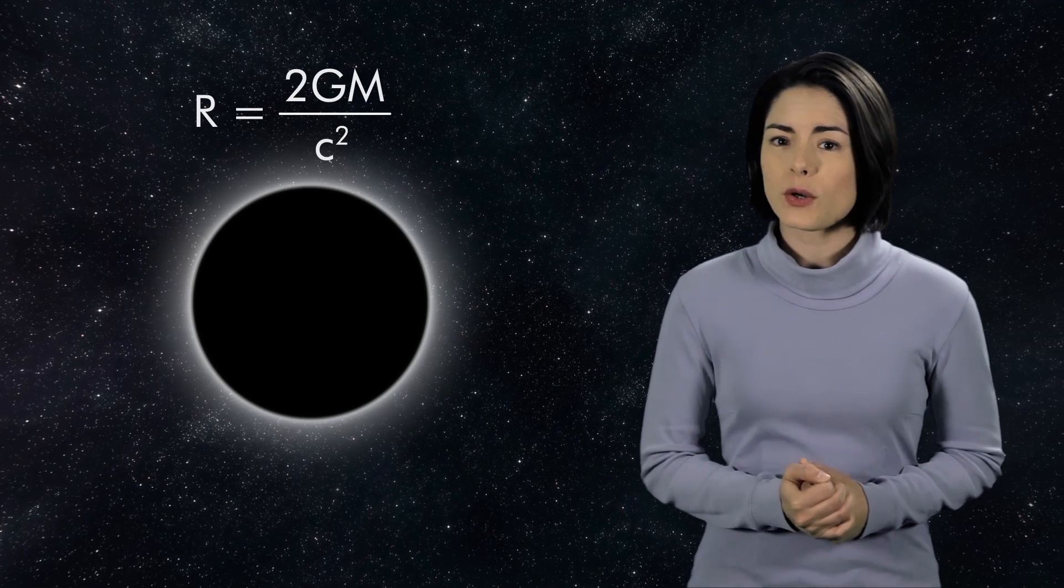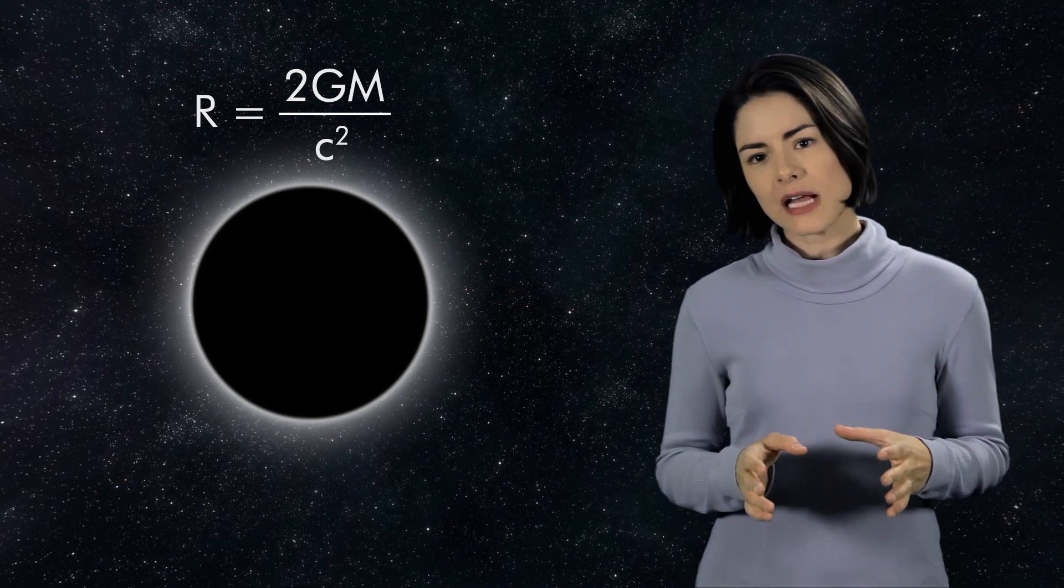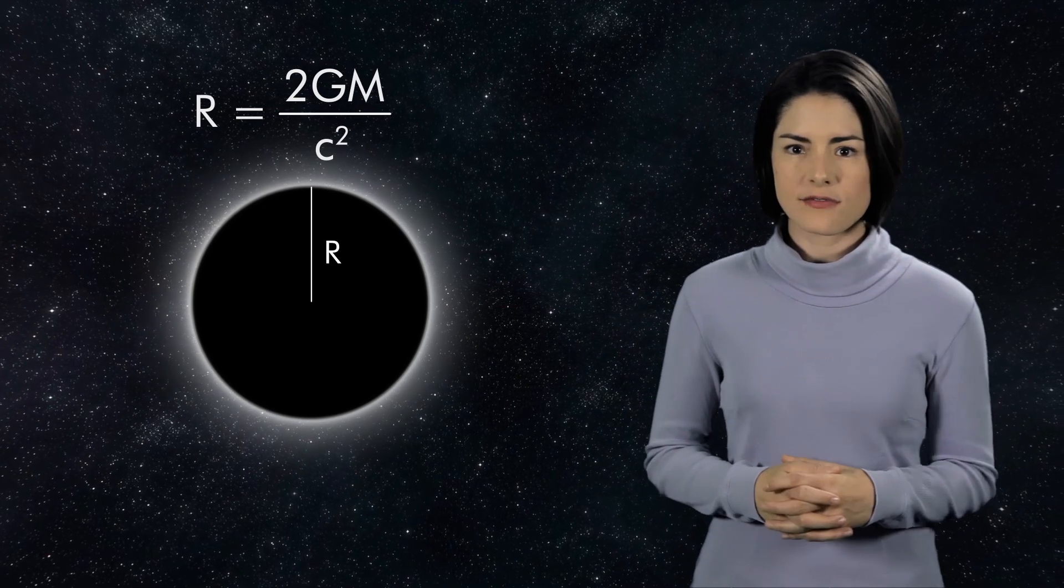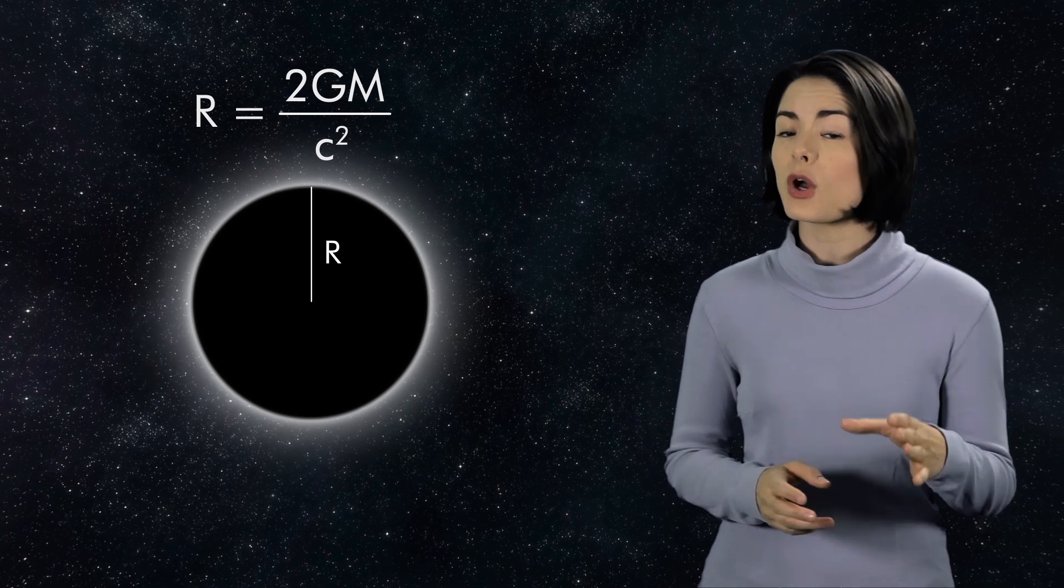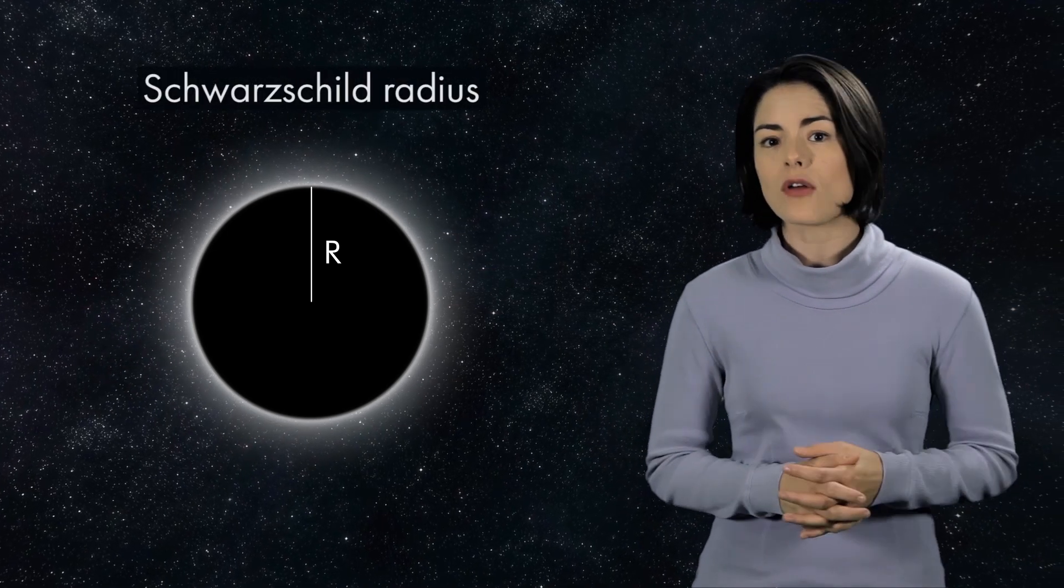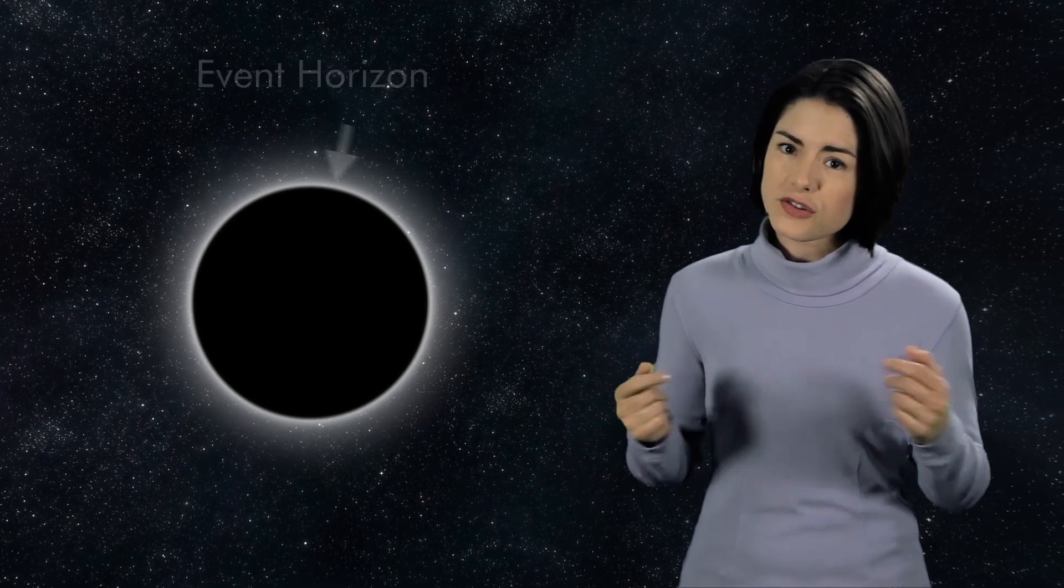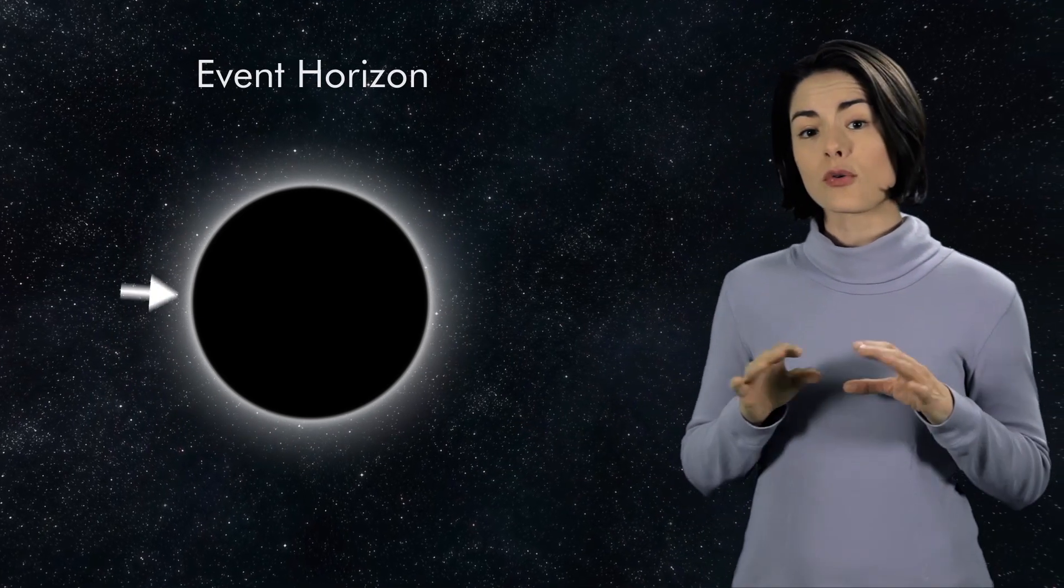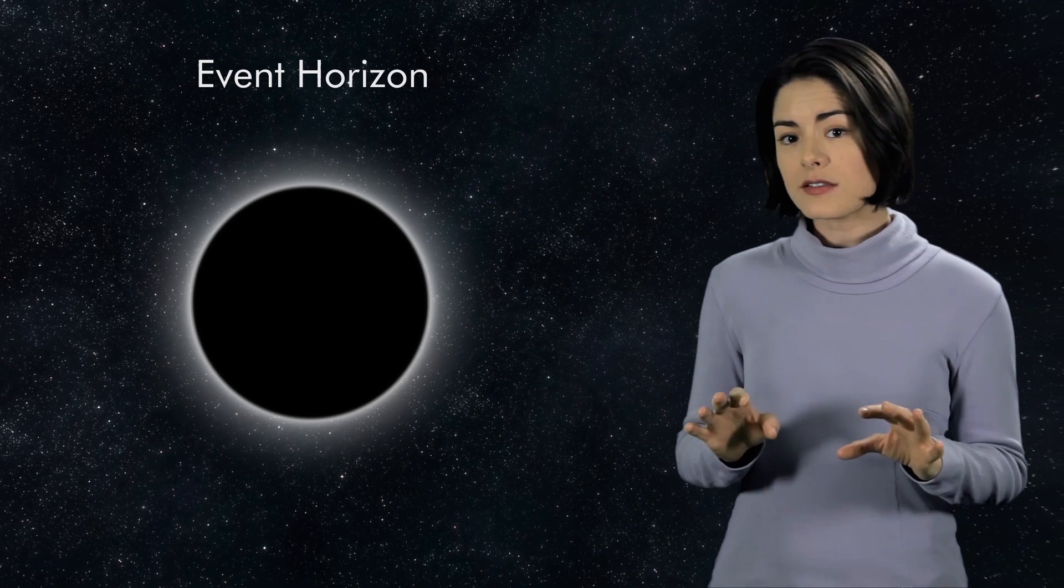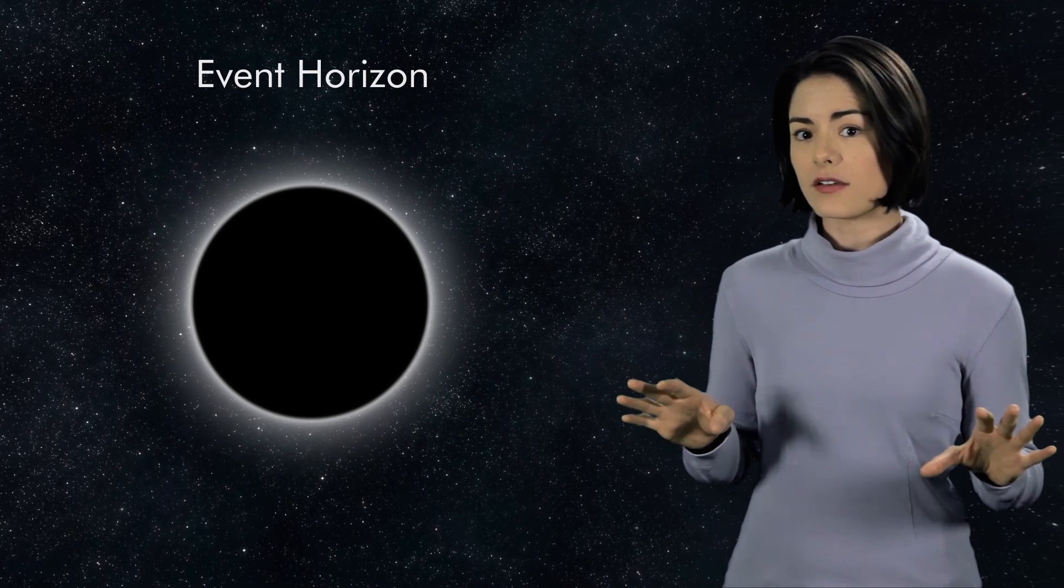Since we can't see a black hole, is there a way to find its size? From Einstein's field equations, we know that given the mass of a black hole, we can determine the size of the sphere that separates the region of no escape from the rest of space. The radius of the sphere is called the Schwarzschild radius, in honor of Carl Schwarzschild. The surface of the sphere is called the event horizon. If anything crosses the event horizon, it's gone forever, hidden from the rest of the universe.